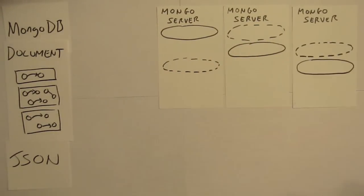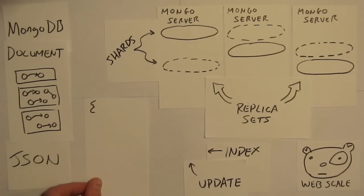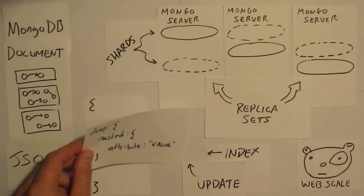Mongo stores JSON, it's document-based. Easily replicated so it can scale. Indexes and updates deep nested attributes, and shards so data's not stale.